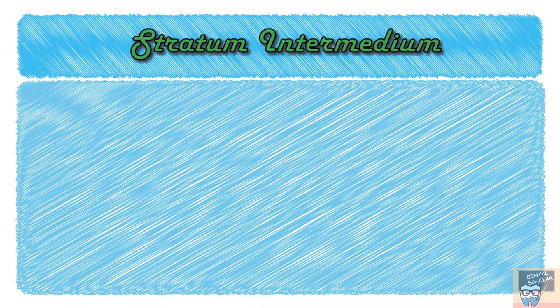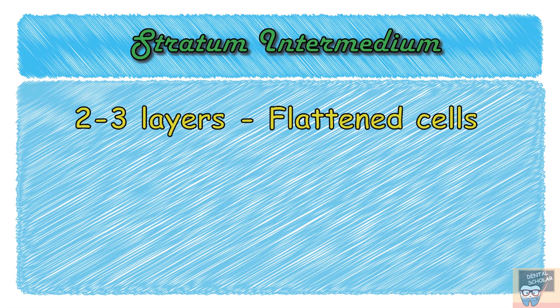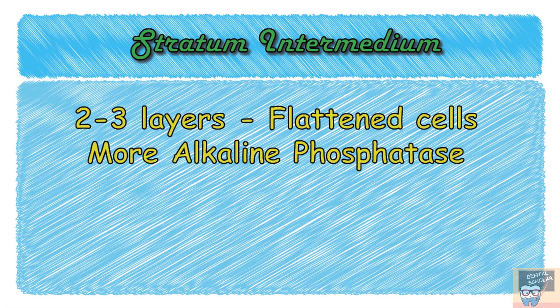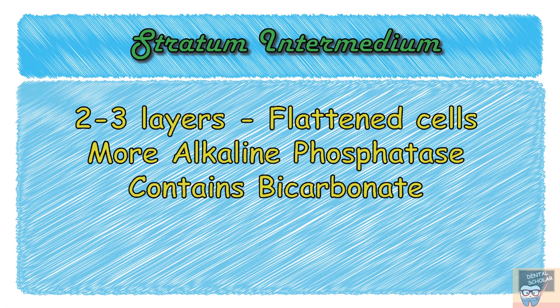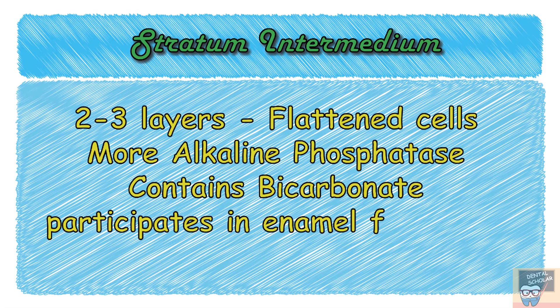The stratum intermedium cells are flattened cells arranged in two to three layers. They have more alkaline phosphatase and contain bicarbonate, so they participate in enamel formation alongside ameloblasts. Combined with ameloblasts, they are known as a single secretory unit.